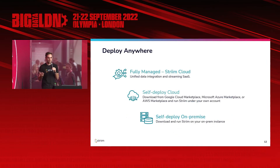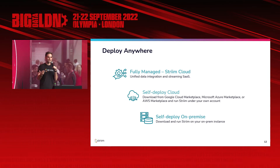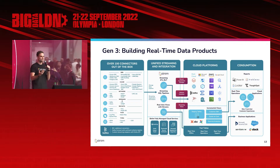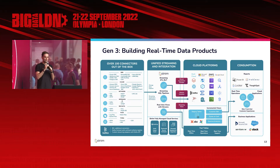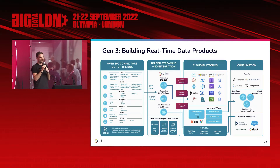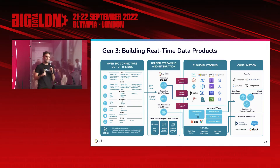One of the advantages of streaming pipelines, especially in the context of Stream, is being able to deploy as a fully managed service, self-deploy in the cloud, or run on-premises. This is the logical view of Generation 3: real-time data products. The idea is taking data — whether in a database, CRM, or any of these systems — transforming and modeling the data in flight, ready for analytics use cases, not copying data. Using data efficiently with streaming SQL pipelines combined with change data capture to capture data in real time.